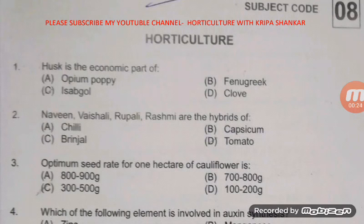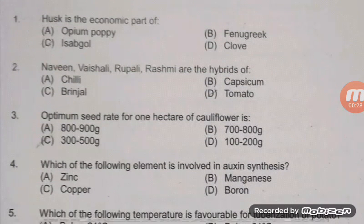Another question: Naveen, Vaisali, Rupali, and Rashmi are the hybrids of which crop? The right answer is D — tomato.